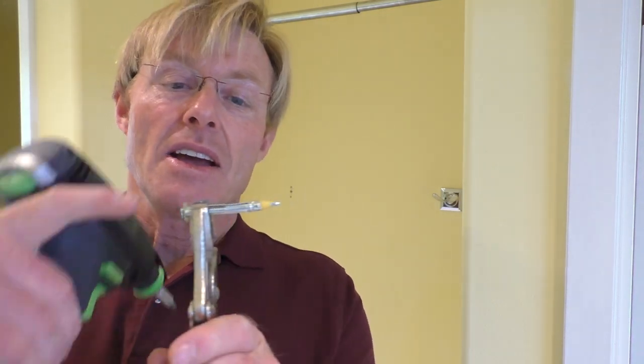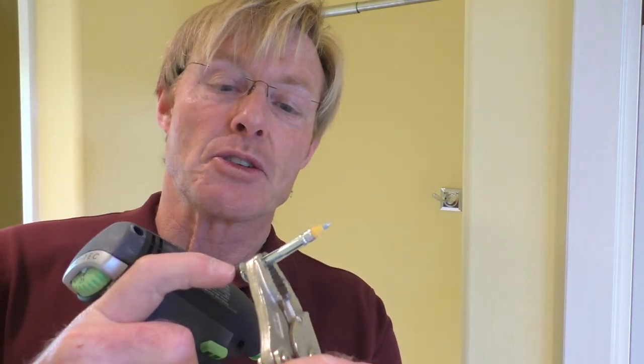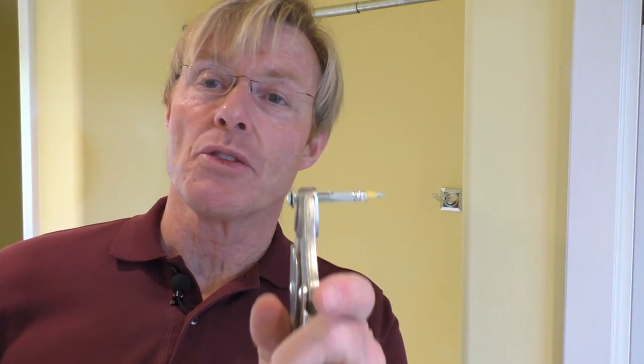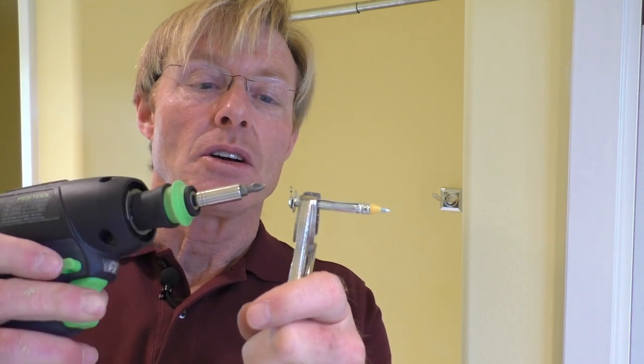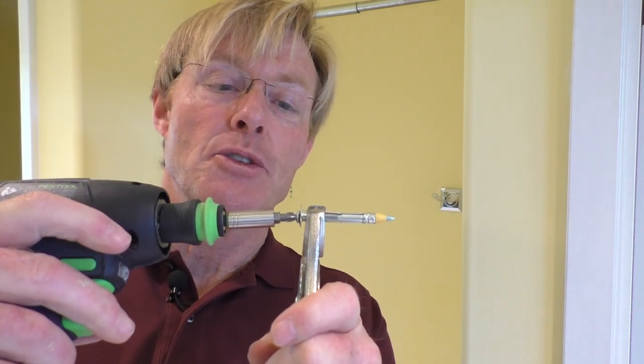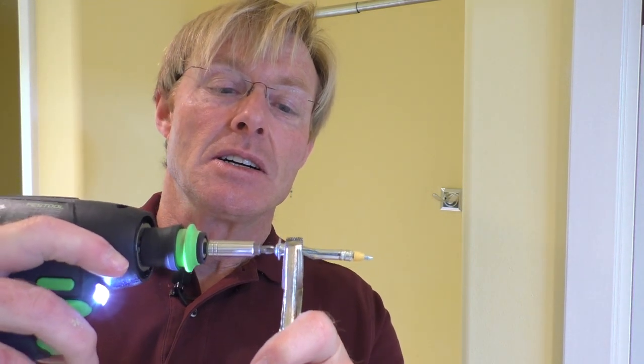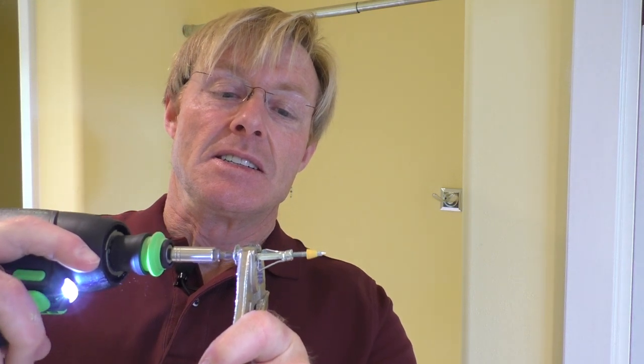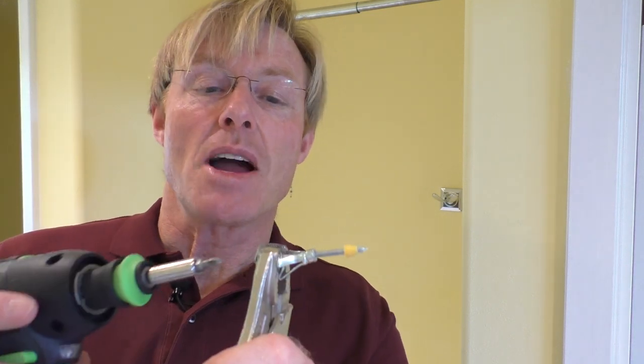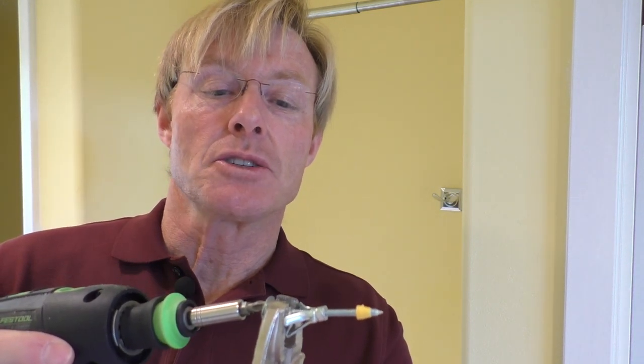After you drill the hole in the drywall, you slip this in, and there are some small prongs that dig into the drywall to hold it from spinning. And then you hold your drill, and you can see it pulls up tight to the back of the drywall, and then you just back the screw out.